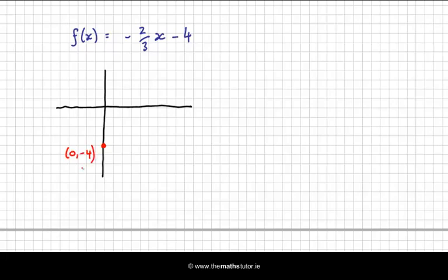(0, -4). And from here, where do we go? Well, we're going across 3 and down minus 2 this time. So if we go across 3, we go down minus 2 to here. Across 3 and down minus 2.